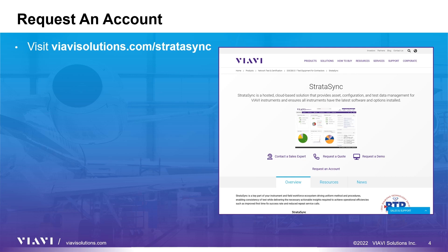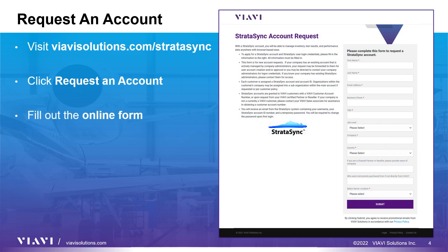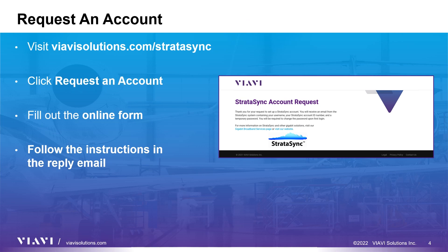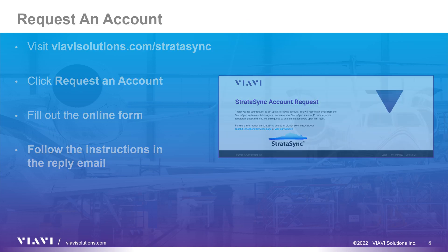Visit our Stratasync account request page at www.viavisolutions.com/Stratasync. Press the Request an Account button on the resulting web page and fill out the required information in the online form. You will receive an email with all of the information required to access your new Stratasync account.